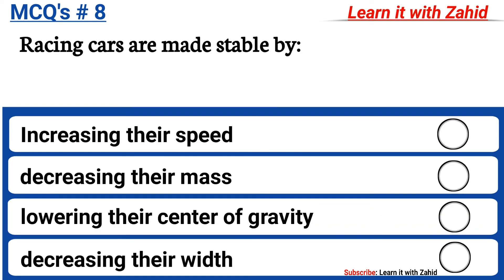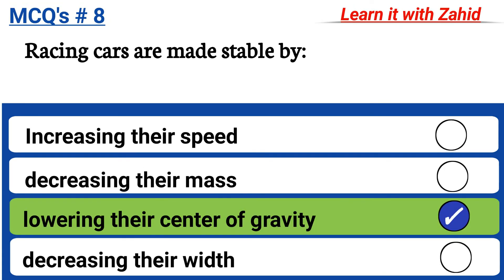Racing cars are made stable by: option A increasing their speed, option B decreasing their mass, option C lowering their center of gravity, option D decreasing their width. The correct answer is option C, lowering their center of gravity.